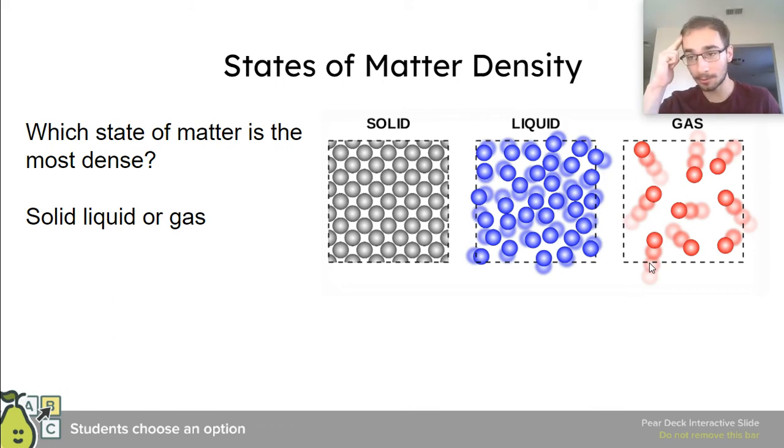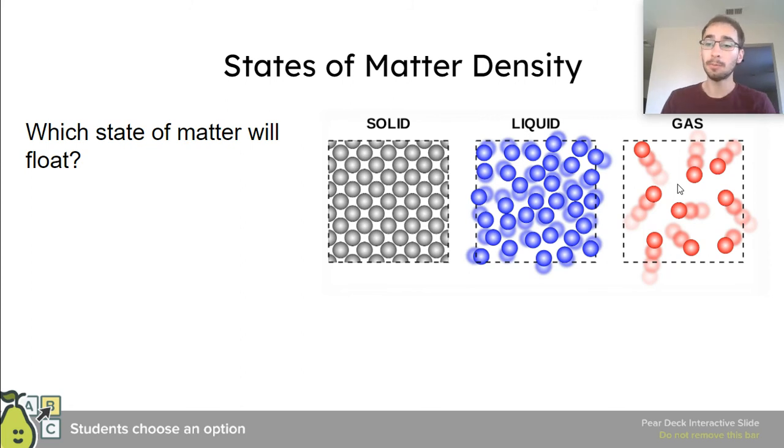Now, it's the same thing with molecules, solid, liquid, and gas. Which one of these is the most dense? And then on your notes, write down which one is the least dense of the bunch. So, knowing the density of them, relatively, which one is going to float?